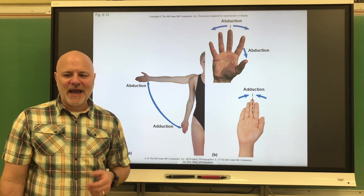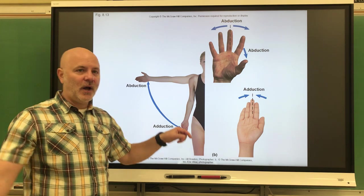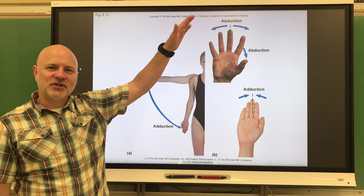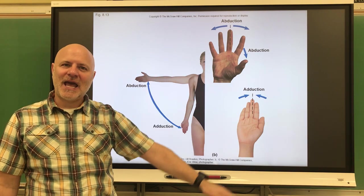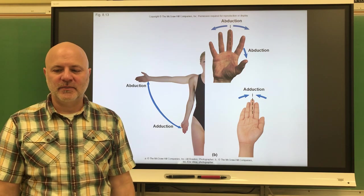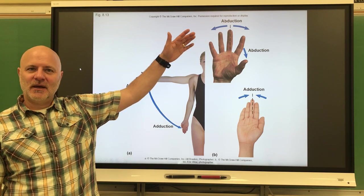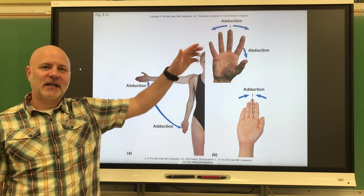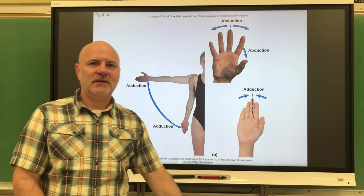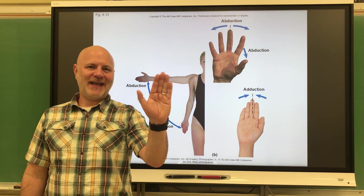Next, abduction and adduction. Abduction is a movement of a body part away from the midline — bringing your arm up. Adduction is bringing that part back towards the midline. A helpful memory trick: if you're abducted, you're taken away — so abduction is away from the midline. You can also do this with the hands.